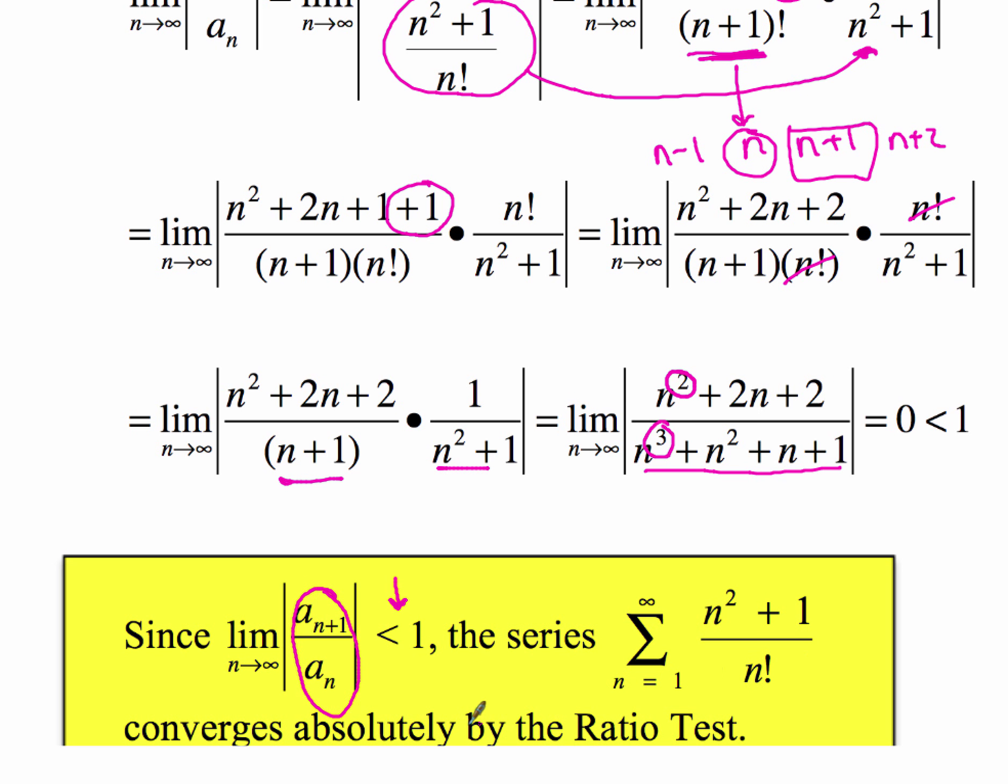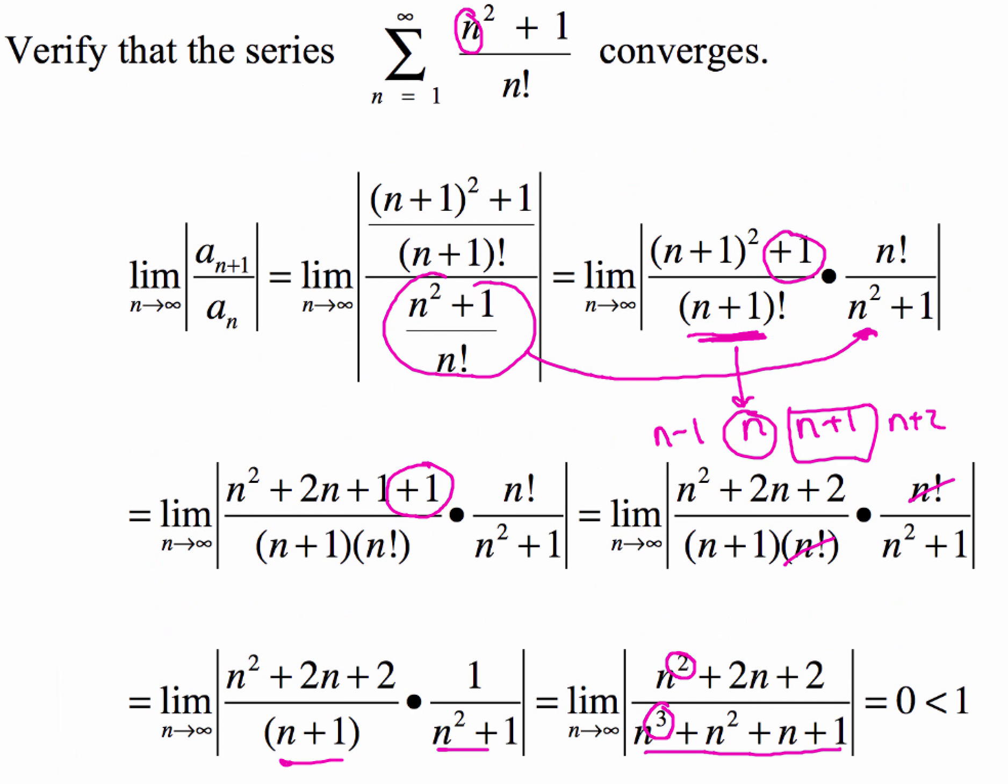So that is how you do this type of problem. So just to kind of recap real quickly, you're going to replace all your n's with n plus 1's to start off with as you go through the limit process, and then of course we'll have to take the reciprocal to clean it up and make it look a little bit nicer, and the second series of lines we expand everything and start to cancel some terms out. And then lastly we'll use what we know about limits to determine the value of that limit. Then we compare that value to 1 and make our conclusion.